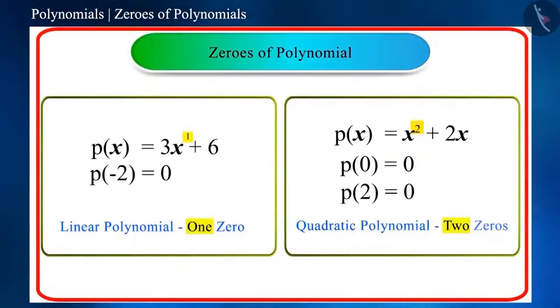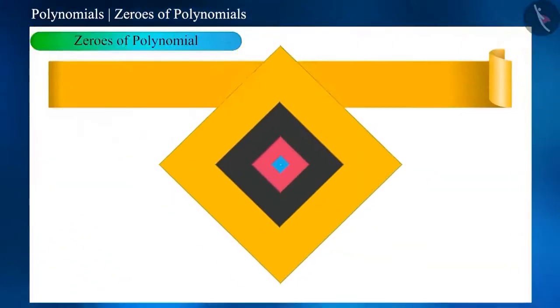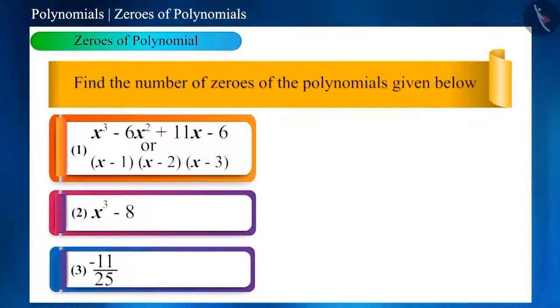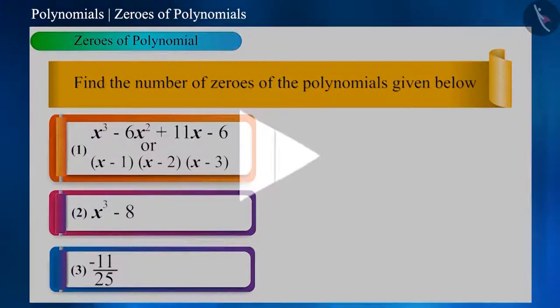As we know, the number of zeros of polynomials is determined by the highest power of variable of polynomials. Let's take a question related to this. Find the number of zeros of the given polynomials. You can think about your answer by pausing the video.